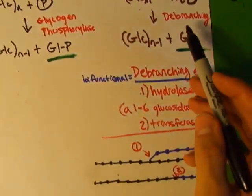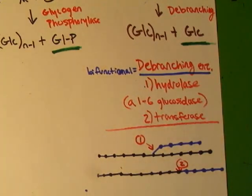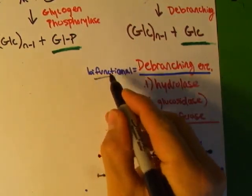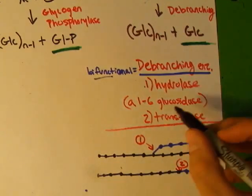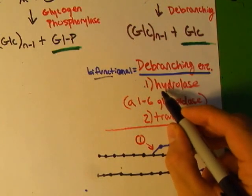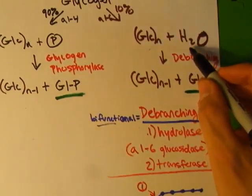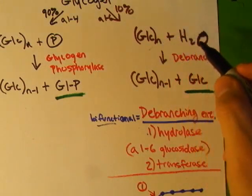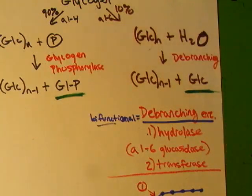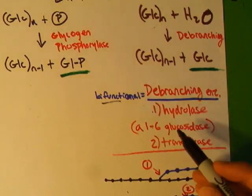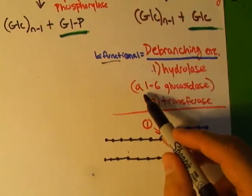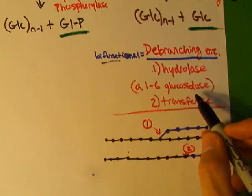Before we move on, let's talk for a second about de-branching enzyme. It usually comes up in a question. Know that it's the bifunctional one of this unit. And the hydrolase activity - it's adding water to the glycogen to tear off the glucose. So that's its first job. It's breaking that alpha-1,6 bond. So it can also be called alpha-1,6 glucosidase.